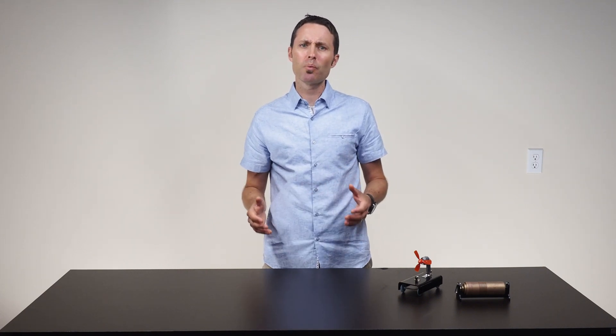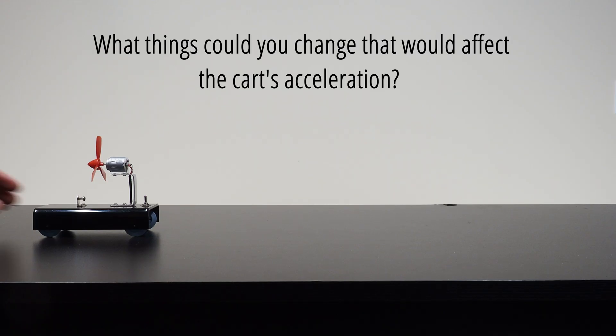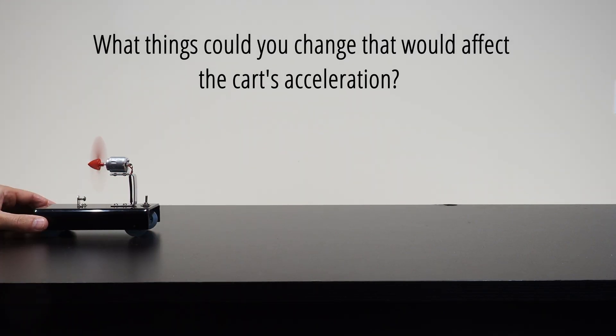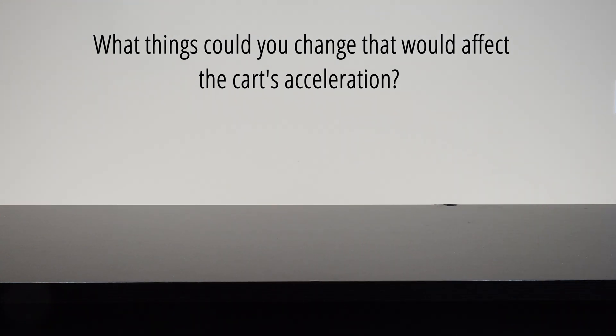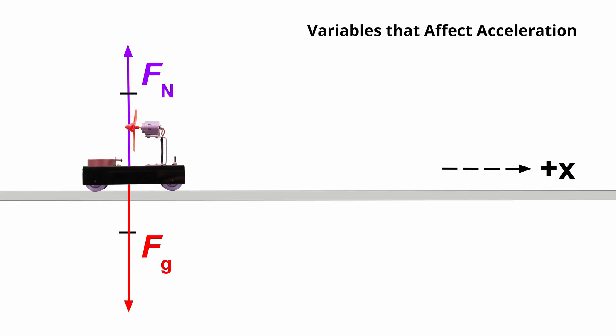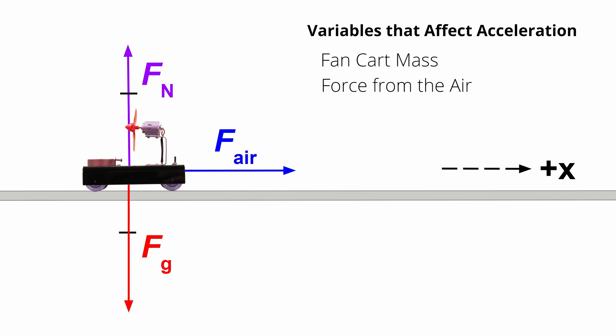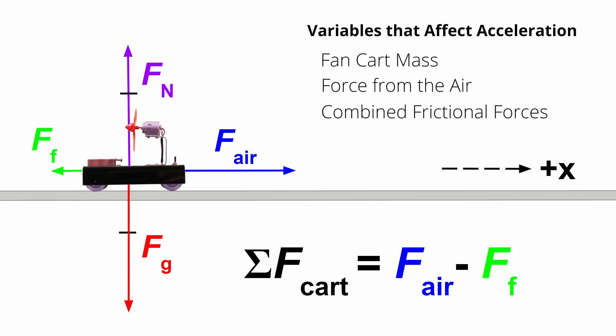Before you guide students to develop a procedure for this lab, the students will need to come up with variables they think will affect the cart's acceleration. Start by asking students what things they could change about the situation. The students will list things such as the cart's mass, the size of the force of the air pushing forward on the propellers, and the size of the combined frictional forces on the cart. Help guide students to see that both the force from the air and the frictional forces affect the size of the sum of the forces on the cart, and it is the sum of the forces that affects the cart's acceleration.